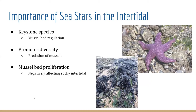For example, Seastars within the rocky intertidal play a big role in the distribution of mussels throughout the area. Mussels create large beds and densely compact on rock surfaces, leaving little room for other anchoring species like barnacles or clams. Through predation of these mussels, Seastars are able to make way for larger diversities of species and maintain the balance of populations.